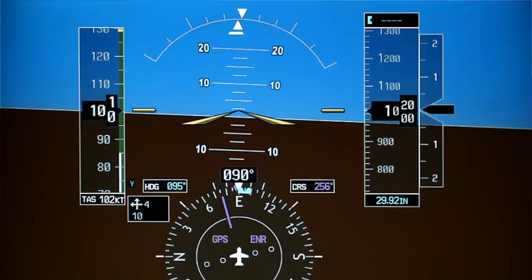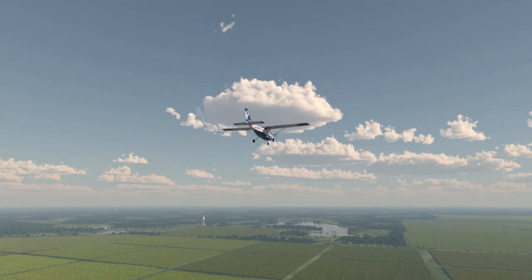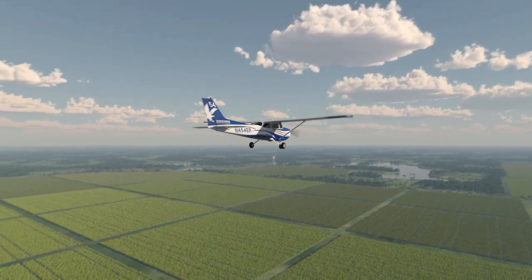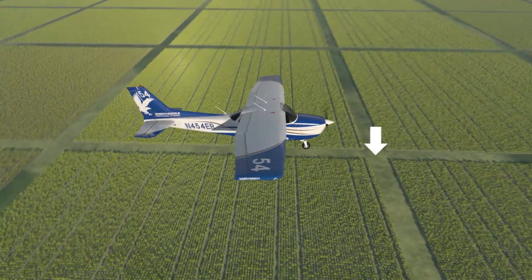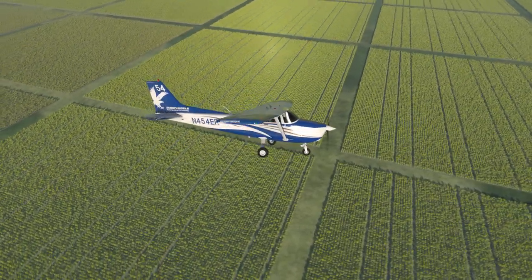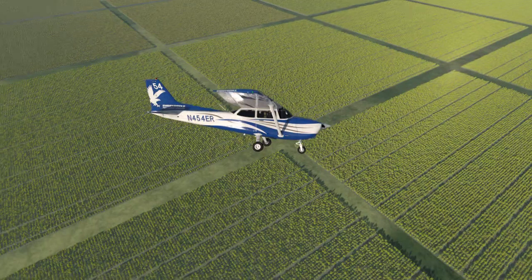Establish and maintain 100 knots indicated airspeed and enter the maneuver on a downwind to one side of the selected point. You must enter close enough that when you lower the wing to begin the turn, the wing will not block your view of the point.